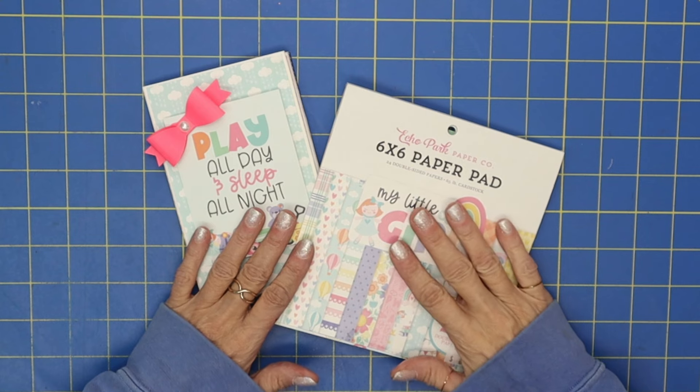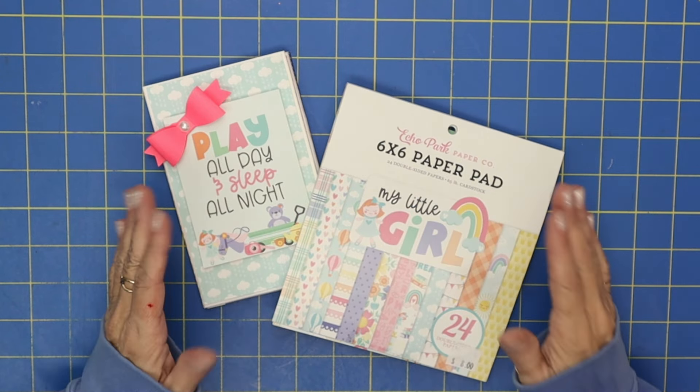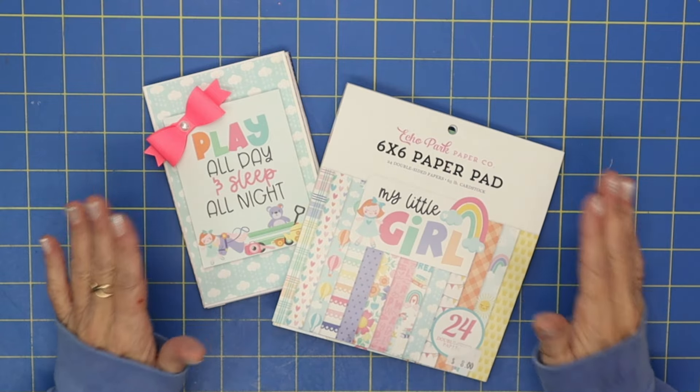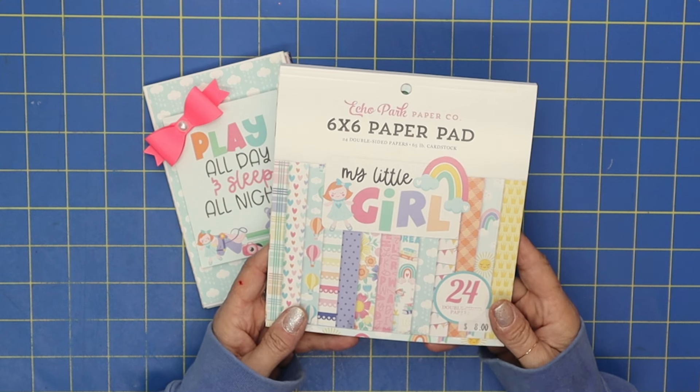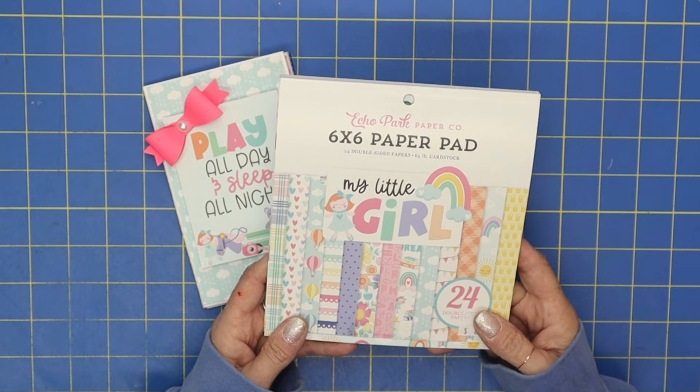I had made one very similar back in May, but we're going to add a couple of different flaps onto this mini album and just take it one step further. Look at this cute paper that I'm using today—it's by Echo Park, it's called My Little Girl.